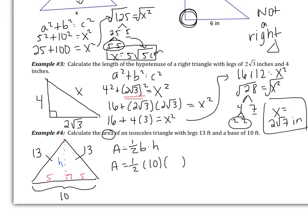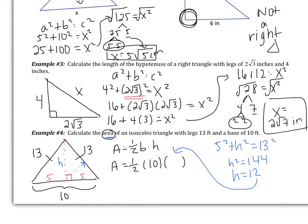Let's see how we did. You should have used the Pythagorean Theorem to find the height: 5 squared plus h squared equals 13 squared. 13 is the hypotenuse because it's across from the right angle. We end up with h squared equals 144, and hence the height is 12. Remember we were asked to calculate the area, so 12 needs to be substituted in. You get the area to be 60 feet squared — remember it is feet squared because we're talking about area.